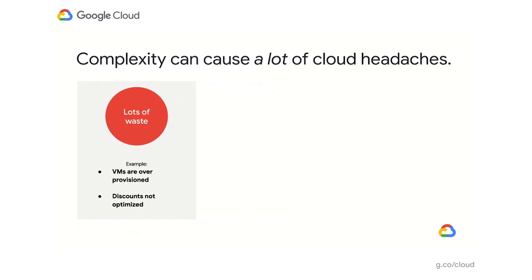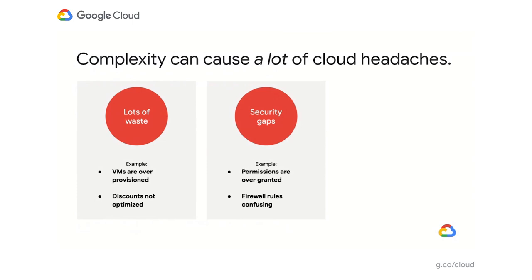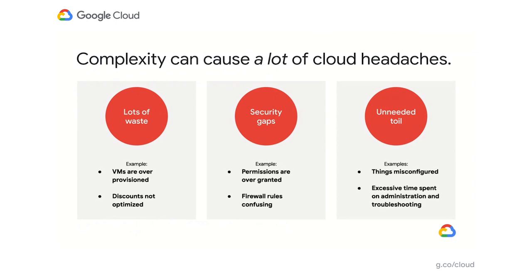Second, complexity can cause security gaps. We see things like access permissions being given away too freely, and firewall rule configurations that are so confusing that people are afraid to change them. Finally, all of this ends up causing lots of extra work. Things get misconfigured, and now you've got to spend your team's time trying to figure out how to troubleshoot it all.